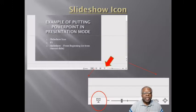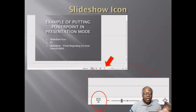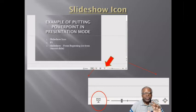The slideshow icon is on the bottom right corner of every slide when you're in edit mode. It's the far right option, and you can see it larger here. Just click on it and it'll automatically transform from edit mode into presentation mode.